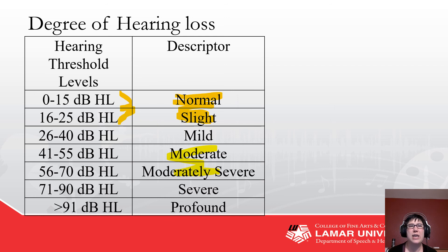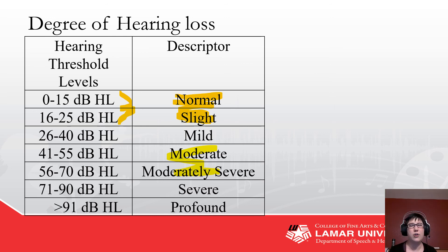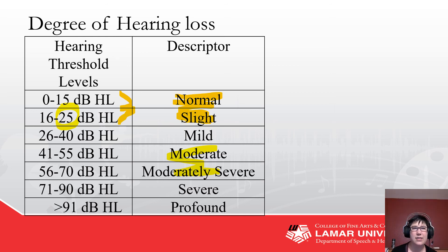Where did dB HL come from? In the 1930s, they gathered a bunch of young white farm boys who had never really been in the city before industrialization at a state fair in Wisconsin, tested a bunch of them, and said this is what normal hearing is. That's how we got the switch from dB SPL — a physics scale — to a norm human reference scale. Where this 25 dB cutoff came from, I've never actually found the original full study or been able to see the standard deviations.